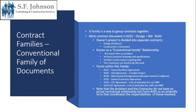So what is a family? A family is the way that they group the contracts together. The most common document is the A201, which is the design-bid-build set of documents. It's where the owner's project is divided into two parts: the design portion between the architect and the owner, and then the construction portion between the owner and his contractor, and subsequently all the subs that are hired. This is known as the conventional family relationship, where the owner hires the architect, and the architect prepares the drawings and the specifications, and also assists the owner in getting all of the contractors hired to do the work.